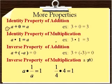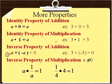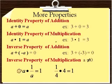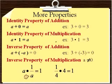Some more properties. The identity property of addition says that if I add anything to 0, I'll get what I started with — so 3 plus 0 gives me 3. The identity property of multiplication says if I multiply anything by 1, I get what I started with — 3 times 1 gives me 3. The inverse property of addition: if I add a number and its opposite, I always get 0 — for example, 3 plus negative 3 gives 0. The inverse property of multiplication: A times 1 over A equals 1. If I multiply a number by its reciprocal I get 1 — so 4 and 1/4 are reciprocals. Note that A cannot equal 0.